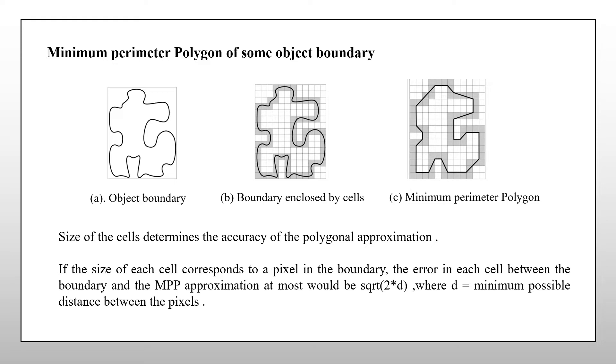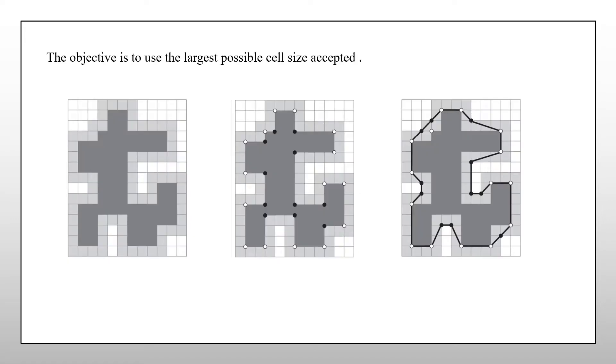And if the size of the cell represents the pixel, then the error can be between 0 to root over 2d. Here, the d will be the minimum possible pixel distance. We use the largest possible cell size acceptable in a given application, and hence producing MPPs with fewest number of vertices.